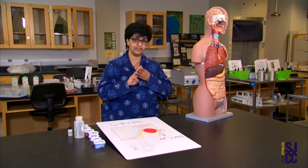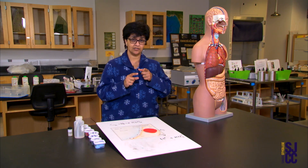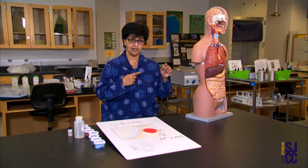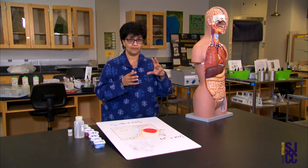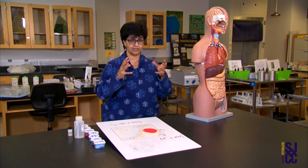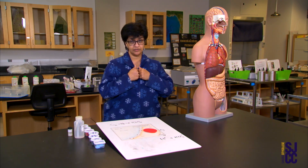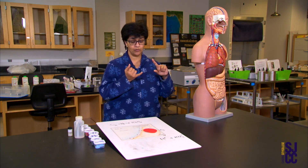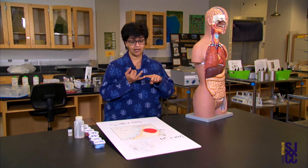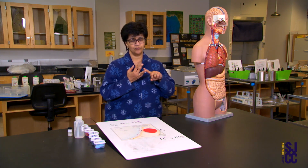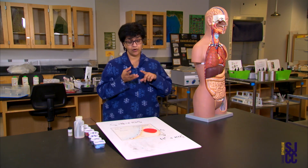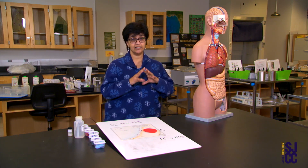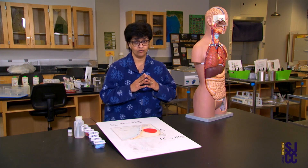We are going to focus on three things in this lab. We are going to look at how the lungs help maintain the right oxygen-carbon dioxide balance. We are also going to look at how the liver helps with the production of urea, and how the liver helps us maintain blood sugar.